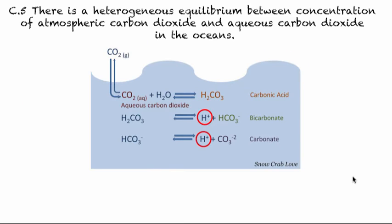Welcome to C.5. Here we're going to look at how there is a heterogeneous equilibrium between concentration of atmospheric carbon dioxide and aqueous carbon dioxide in our oceans depicted here. So obviously carbon dioxide, a big concern because it's a greenhouse gas.